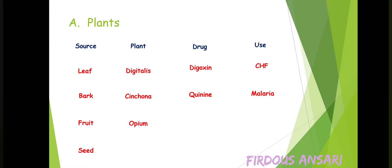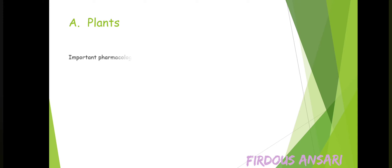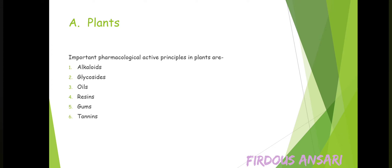Opium fruit is used from which morphine is extracted, used as an analgesic. Similarly, physostigmine plant seeds are used from which anticholinesterase can be extracted, used in the treatment of myasthenia gravis. Important pharmacologically active principles in plants are alkaloids, glycosides, oils, resins, gums, and tannins.